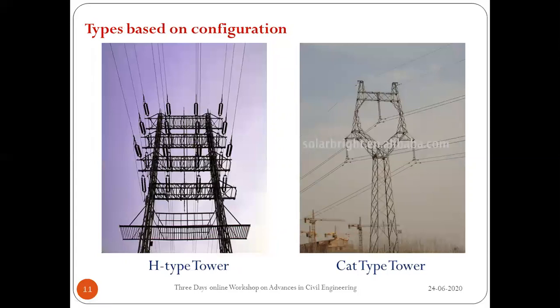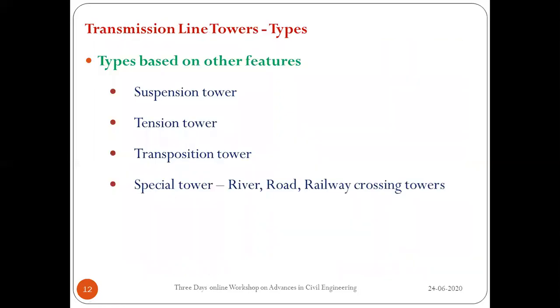The H-type tower has two columns with lattice steel beams connected to form a single structure — it looks like an 'H'. The cat head-type tower's arrangement of conductors and the shape of the tower resembles the head of a cat, hence the name.